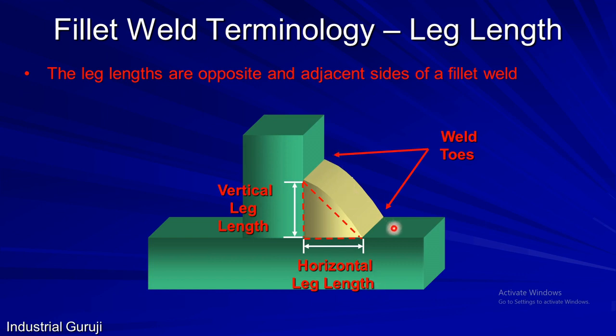The arrows are pointing towards the toes of a weld. Regarding toes, there is a famous quote in welding: toes of a weld should be smoothly blended. This is done to avoid stress concentration.